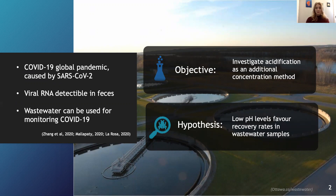The detectability of SARS-CoV-2 RNA in feces has been extensively reported, and wastewater streams are presently being used to monitor COVID-19. This study investigated an additional concentration method along with simple centrifugation, by testing samples at three different pH levels to determine if pH will alter the RNA recovery rates. The hypothesis is that low pH levels will favor recovery of extracted viral RNA from the wastewater samples.